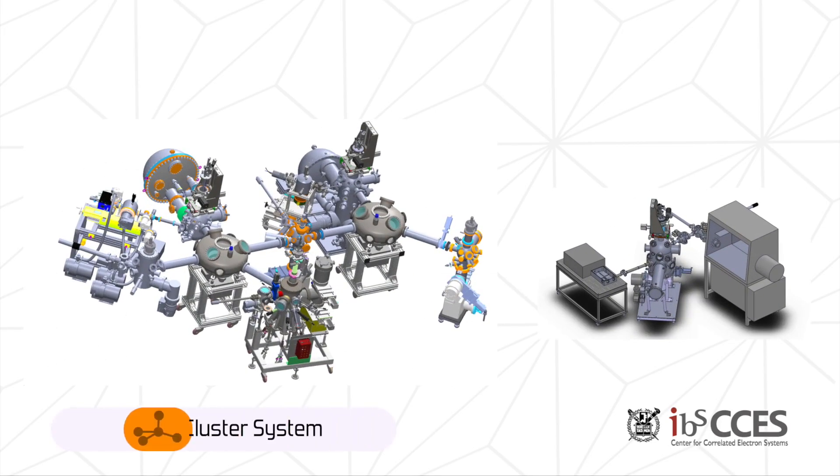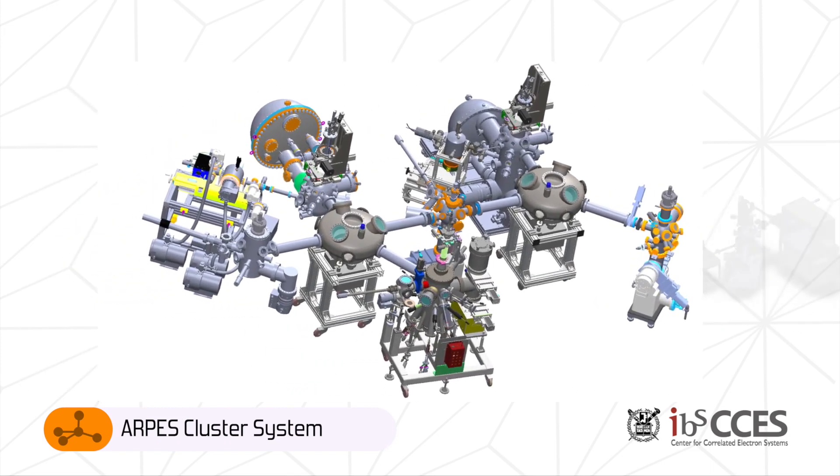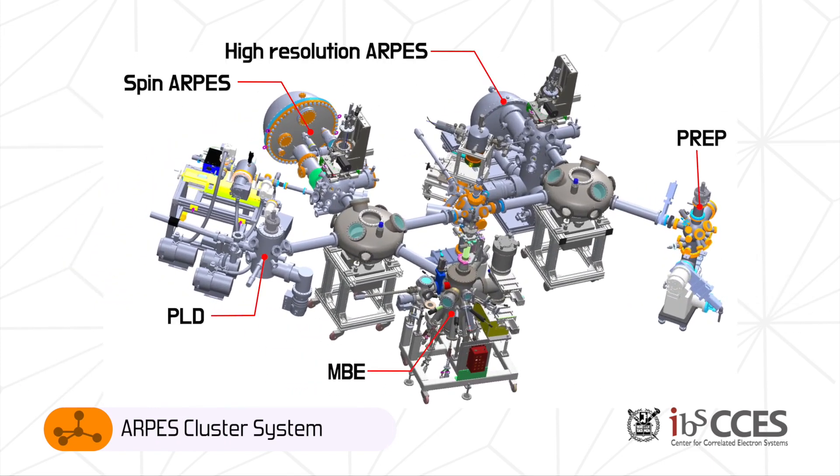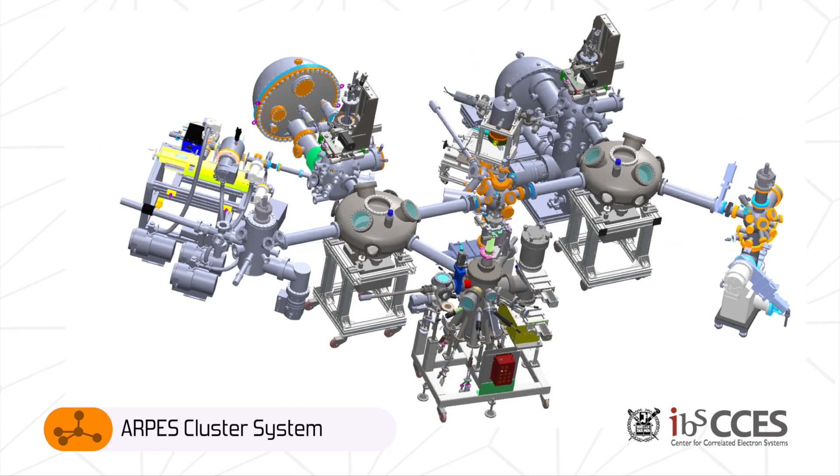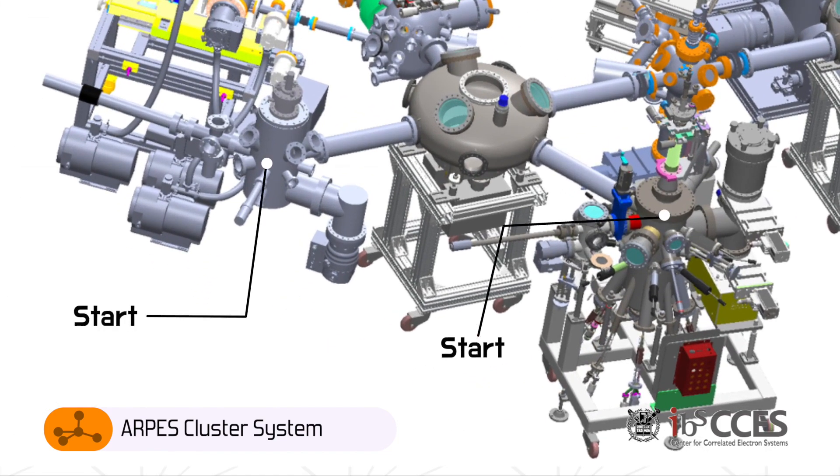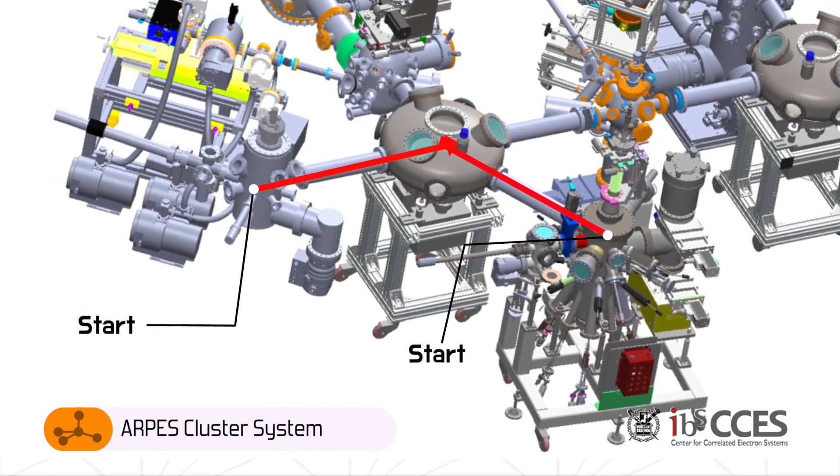Since 2016, the ARPES group has been constructing an in-situ ARPES cluster. This cluster consists of two ARPES systems, a preparation chamber, MBE and PLD. Each system is connected by UHV chamber with ultra-high vacuum condition. This allows samples to be transferred between each system without surface contamination.